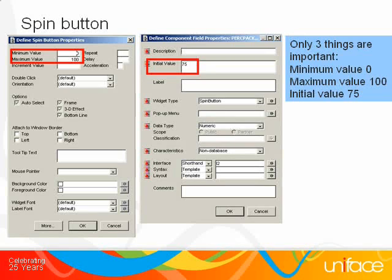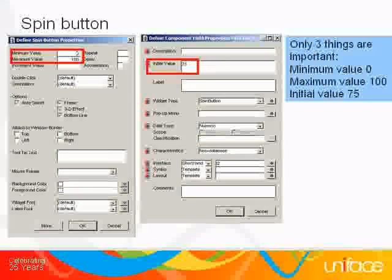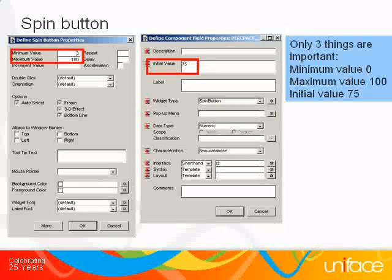For a pie chart, we need a total of 100%. So in the spin button, we set the minimum value to 0 and the maximum value to 100. And I'd like the initial value to be 75.